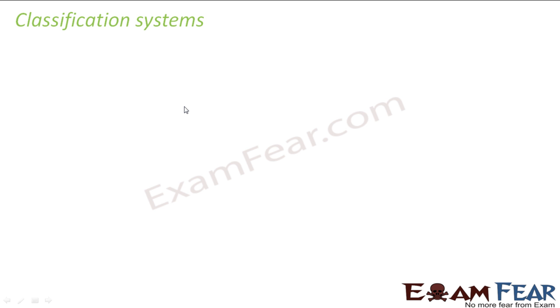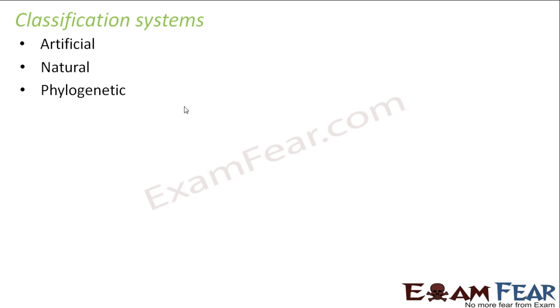We will see how different classification systems evolved over time and how better classification systems came up with the passage of time. We will discuss three classification systems: the artificial system, the natural system, and the phylogenetic system, each having a different basis for classification.